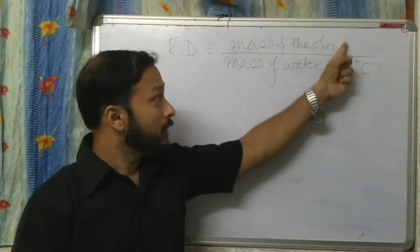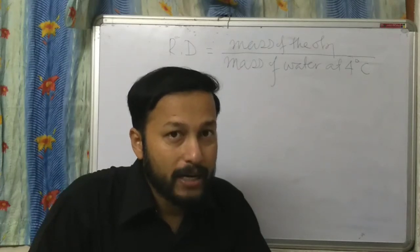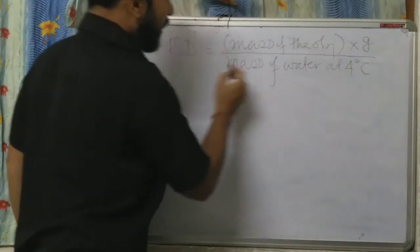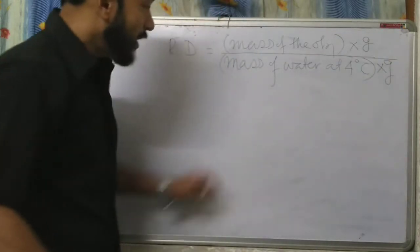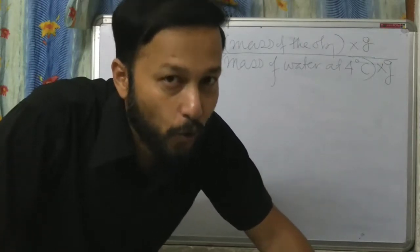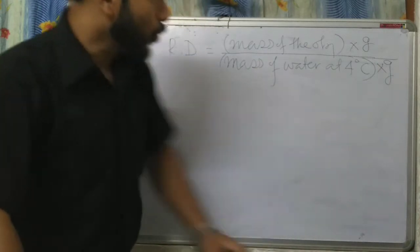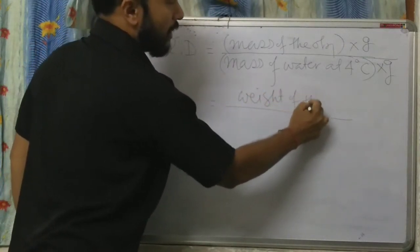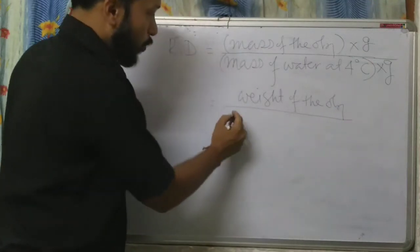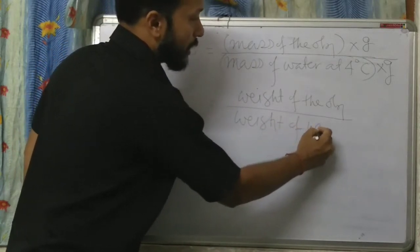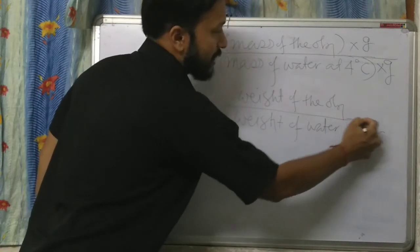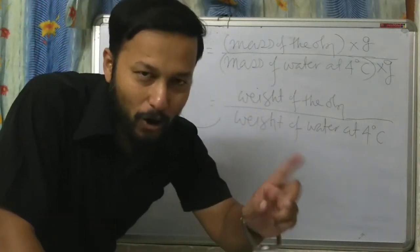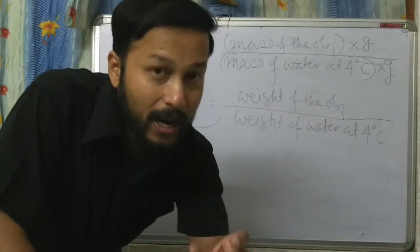Now we multiply both the numerator and denominator by gravity (g). Since mass into gravity equals weight, we get: relative density equals weight of the object by weight of water at four degrees Celsius. But remember, the volume of the object and volume of the water must be taken as equal.